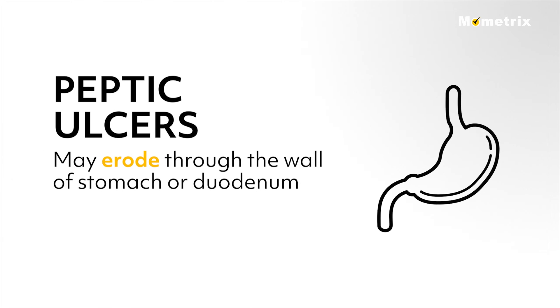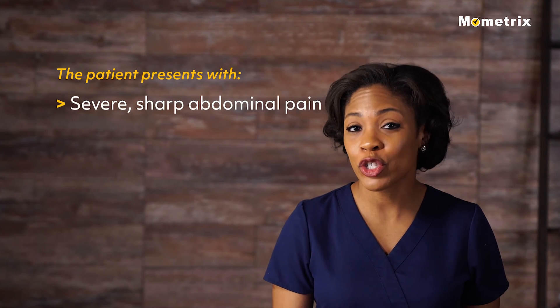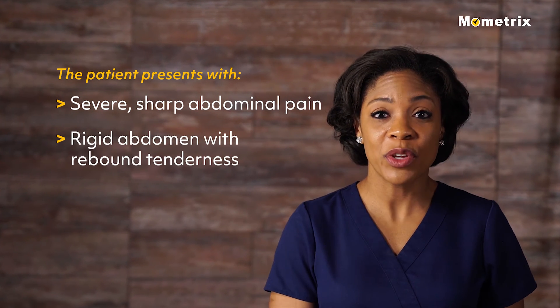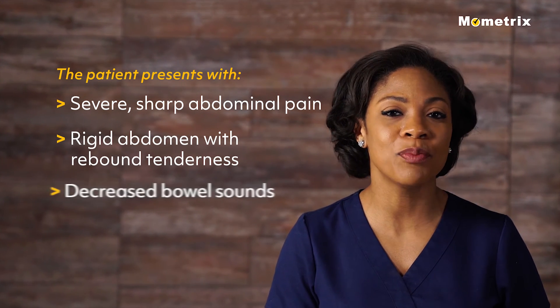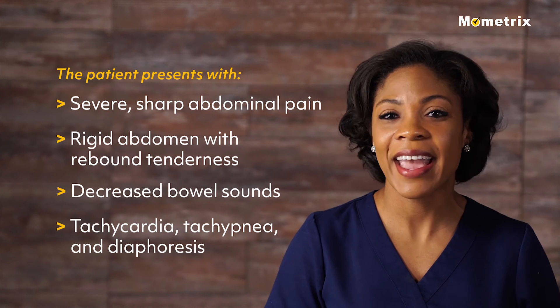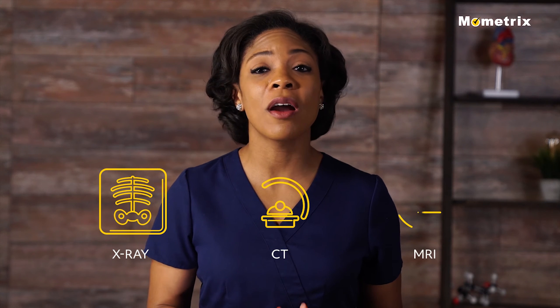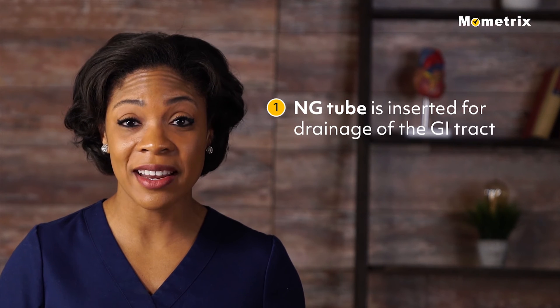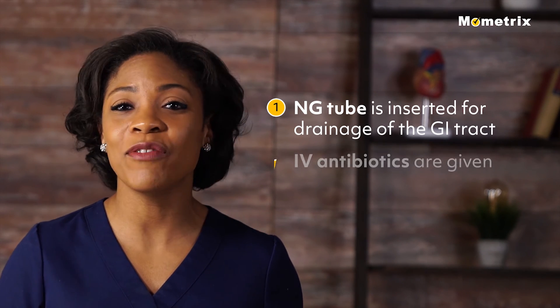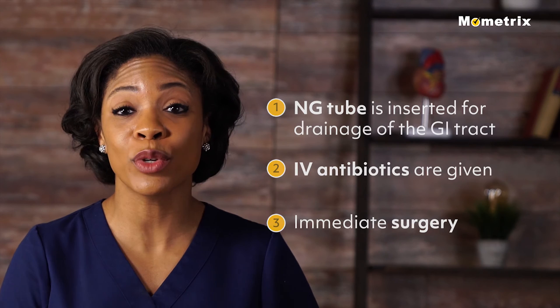A peptic ulcer may erode through the wall of the stomach or duodenum, spilling gastric secretions into the abdominal cavity. It may occur spontaneously or from a complication of endoscopy. The patient presents with severe sharp abdominal pain, rigid abdomen with rebound tenderness, decreased bowel sounds, tachycardia, tachypnea, and diaphoresis. An x-ray, CT, or MRI confirms the diagnosis. An NG tube is inserted for drainage of the GI tract, IV antibiotics are given, and immediate surgery is required.